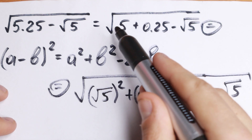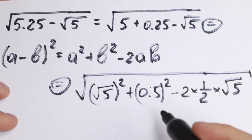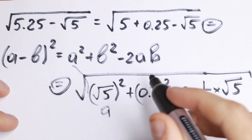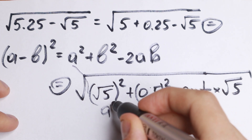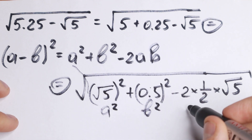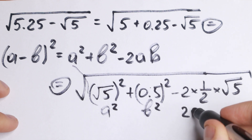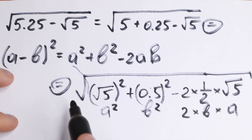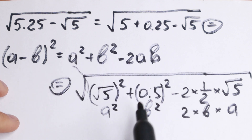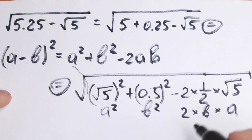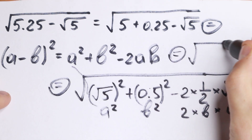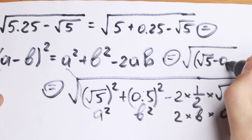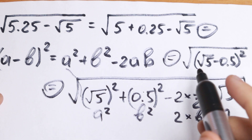What I want to show you: √5 is our A, and 0.5 is our B — so (0.5)² is B squared and (√5)² is A squared. The 2 times one-half times √5 matches 2AB. So the entire expression inside the square root is equal to (A minus B)², which we write as √((√5 minus 0.5)²).